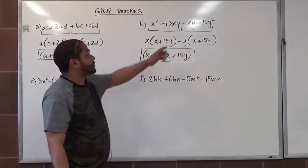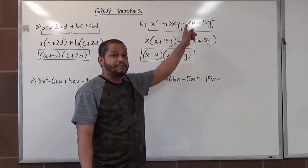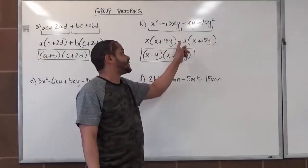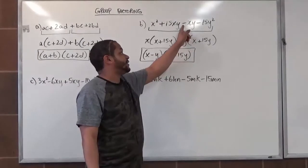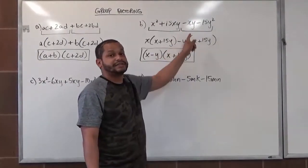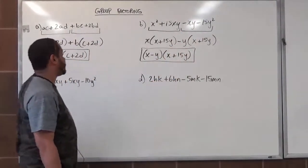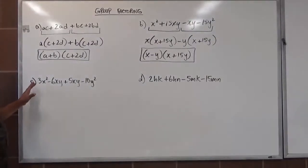When you have a negative term for the third term, remember that you're pulling out the negative and changing the following sign to the opposite sign. It's a very clear and straightforward thing to do.